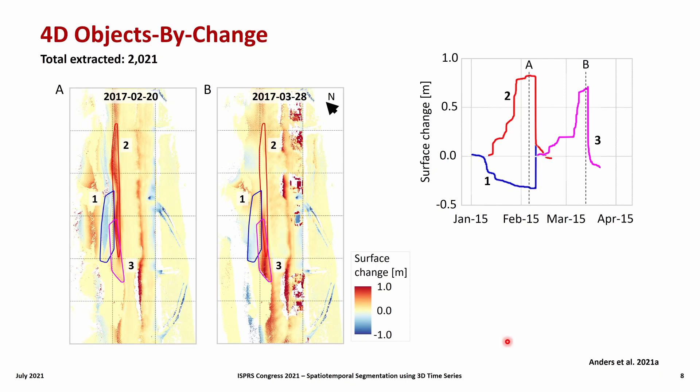The maps here show three change forms that illustrate how drawbacks of pairwise change analysis are avoided. The two accumulation forms occur in the same area but in successive periods and are separately extracted. And the erosion and accumulation form occur during the same period and are independently delineated with some spatial overlap at the boundaries.